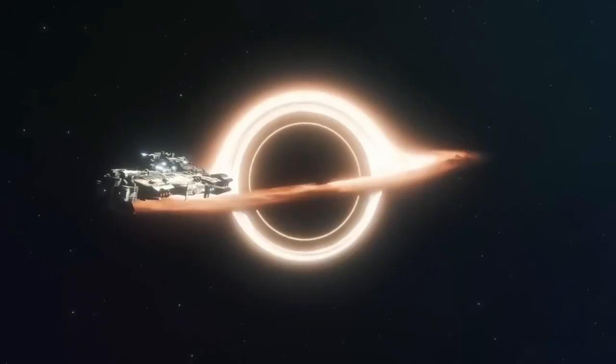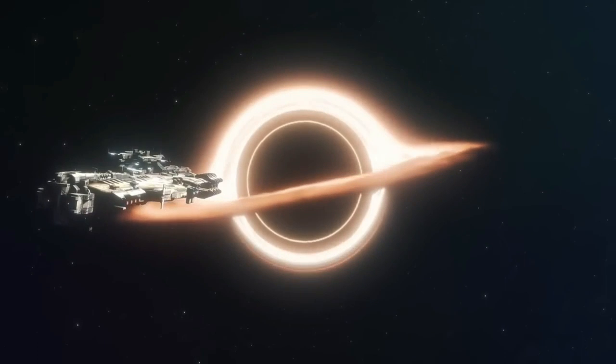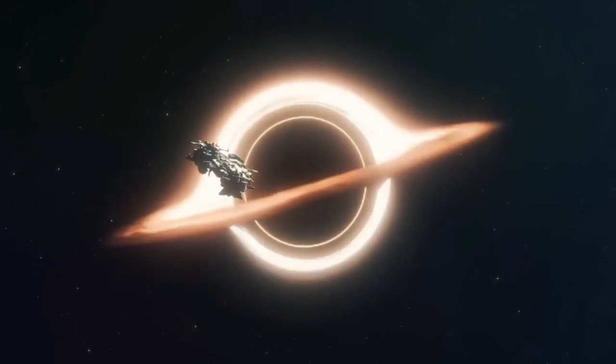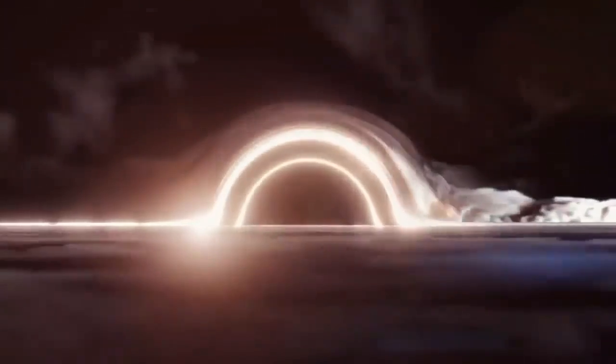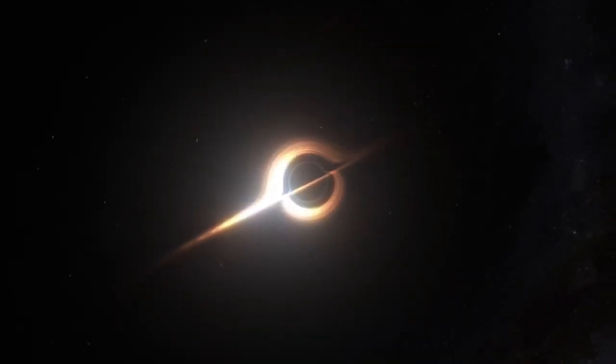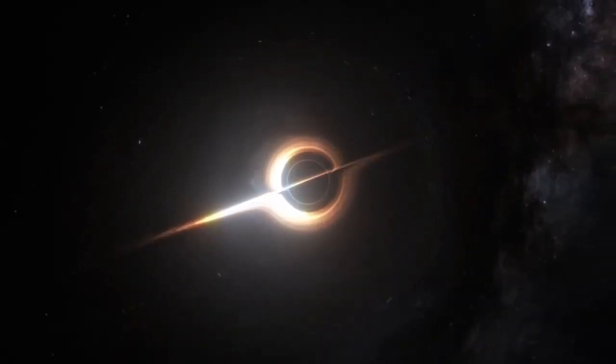Hawking proposed that black holes emit radiation, which is now known as Hawking radiation, and that this causes black holes to lose mass slowly over time. He also proposed that information about objects falling into black holes is stored on its event horizon, which is the point of no return.